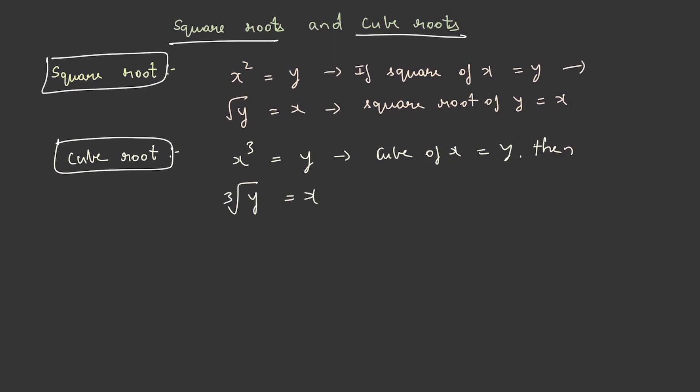To explain square root with an example, let's take 2² which is equal to 4 and square root of 4 is equal to 2. Similarly, for cube root, 2³ is equal to 8 and cube root of 8 will be equal to 2.